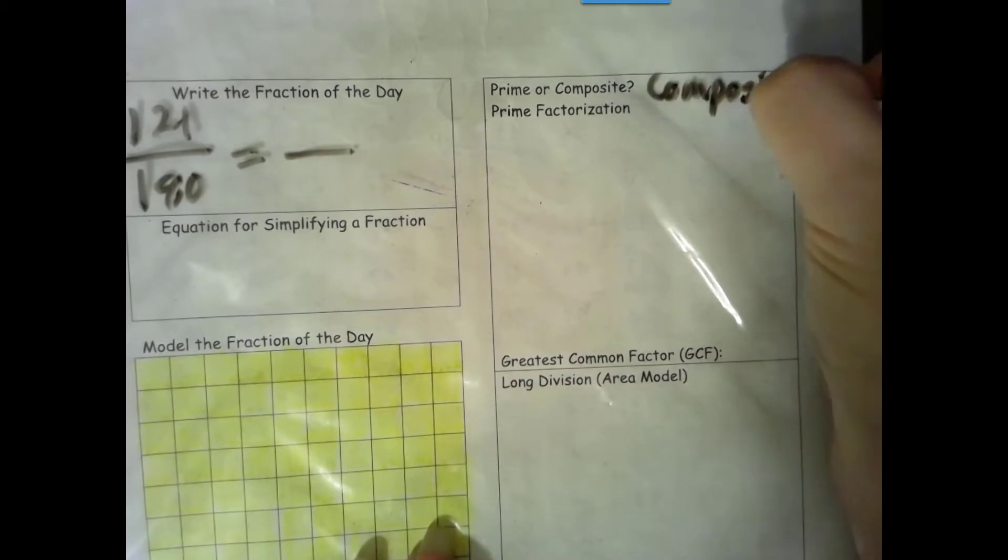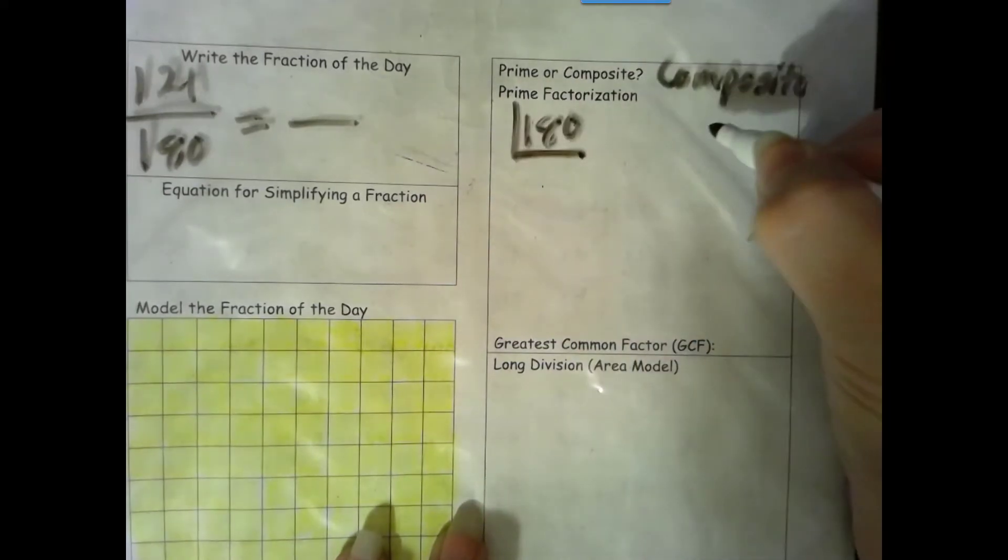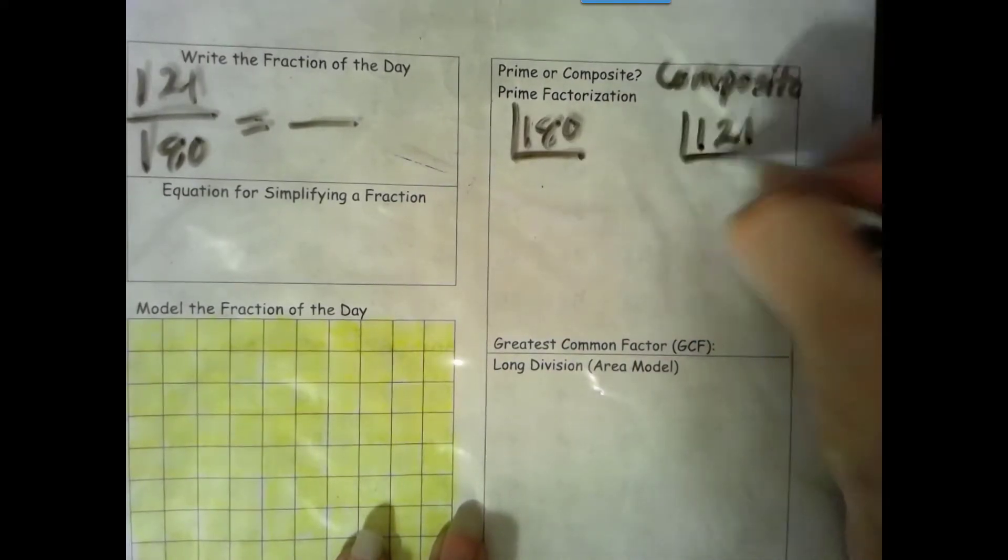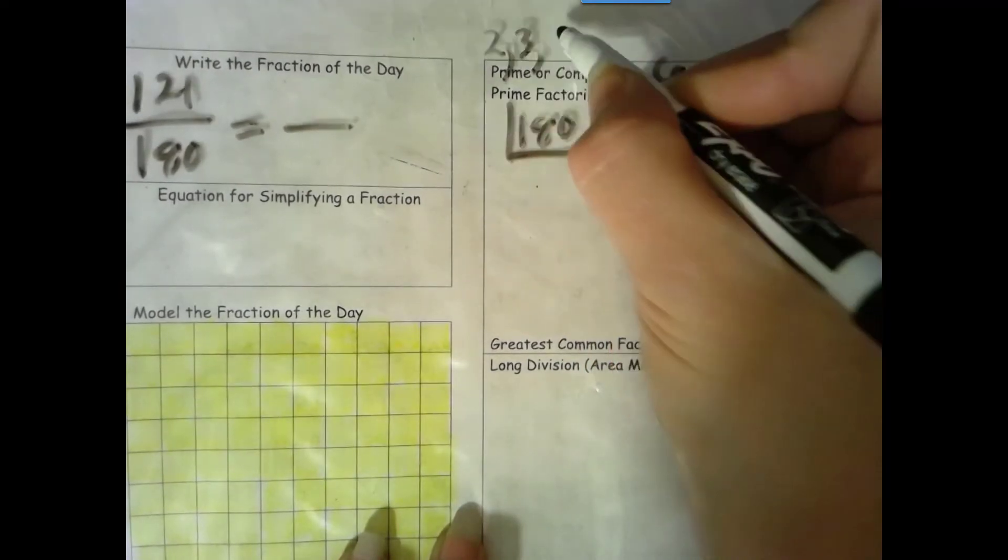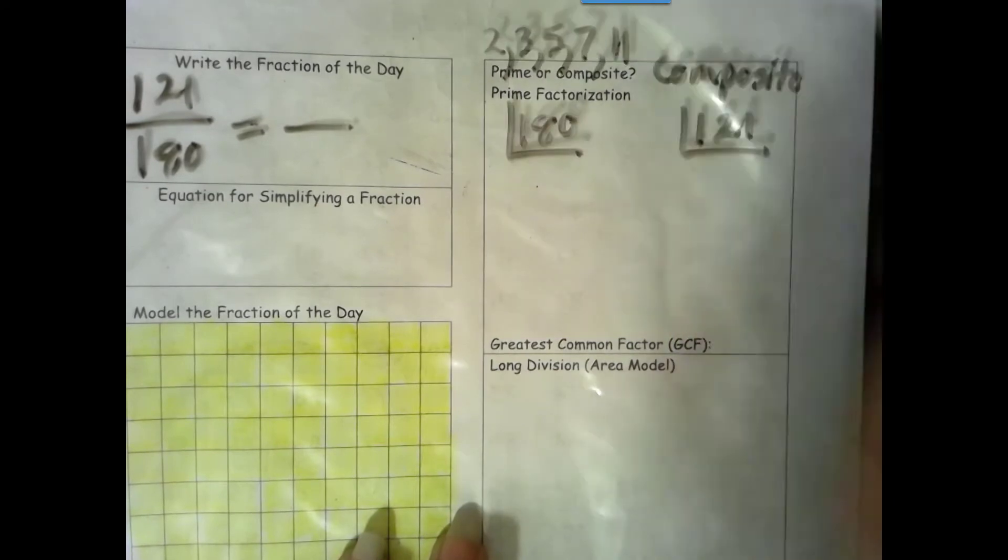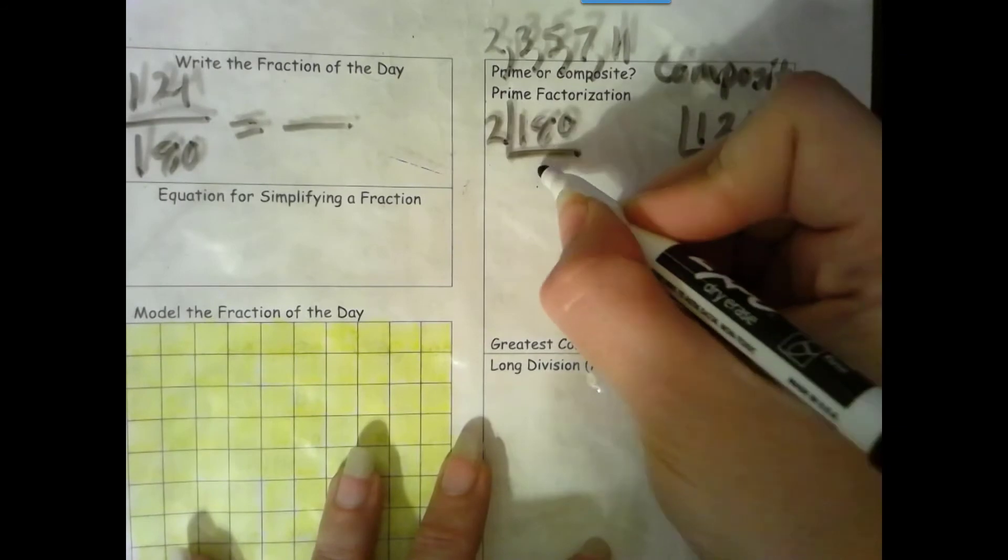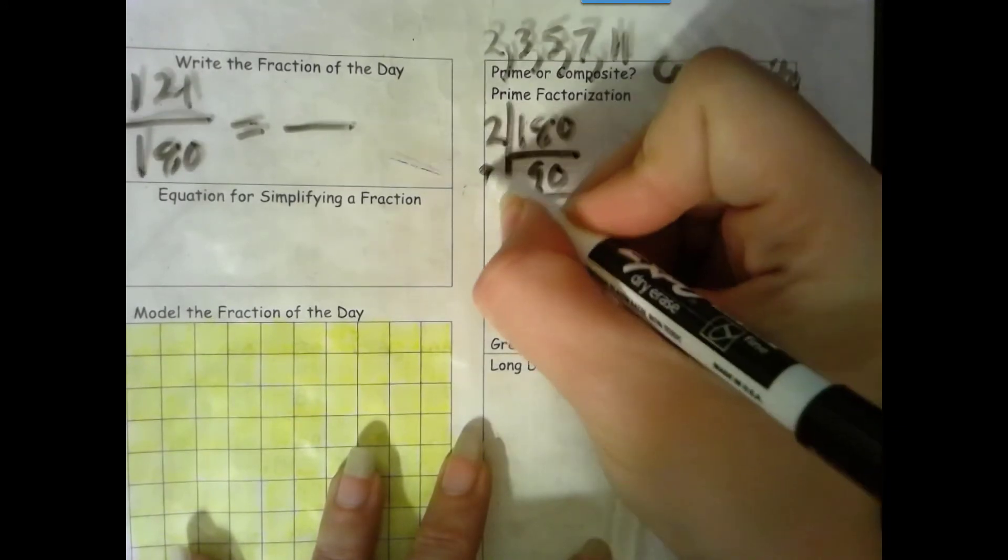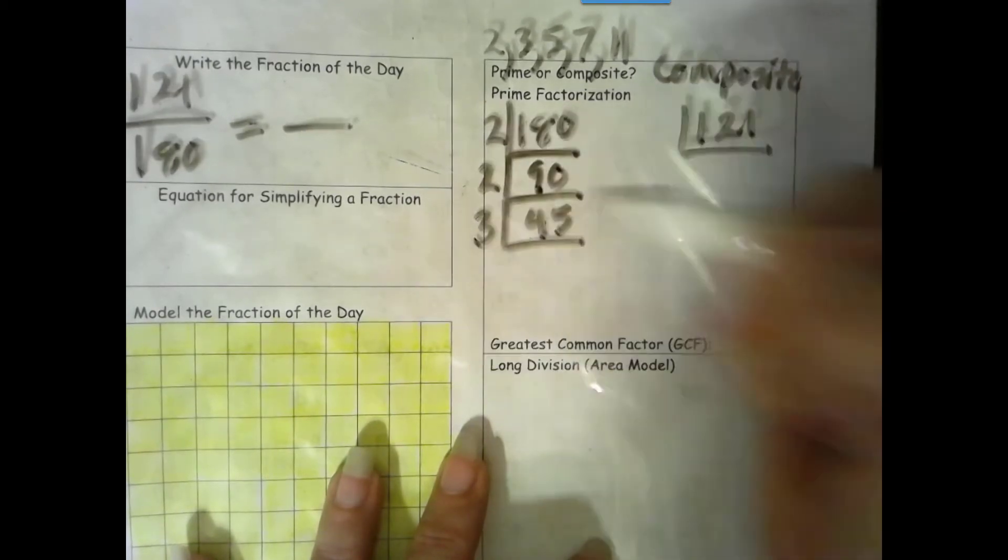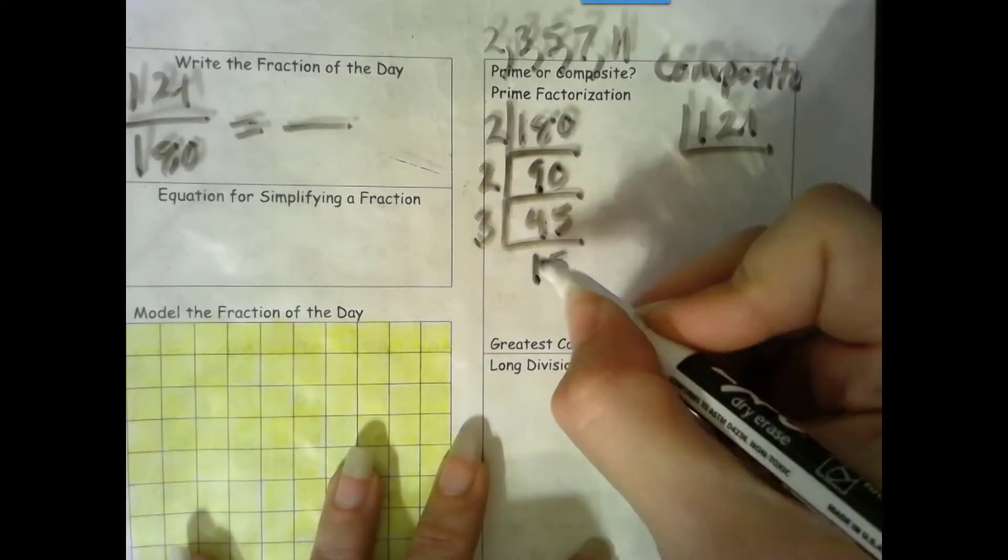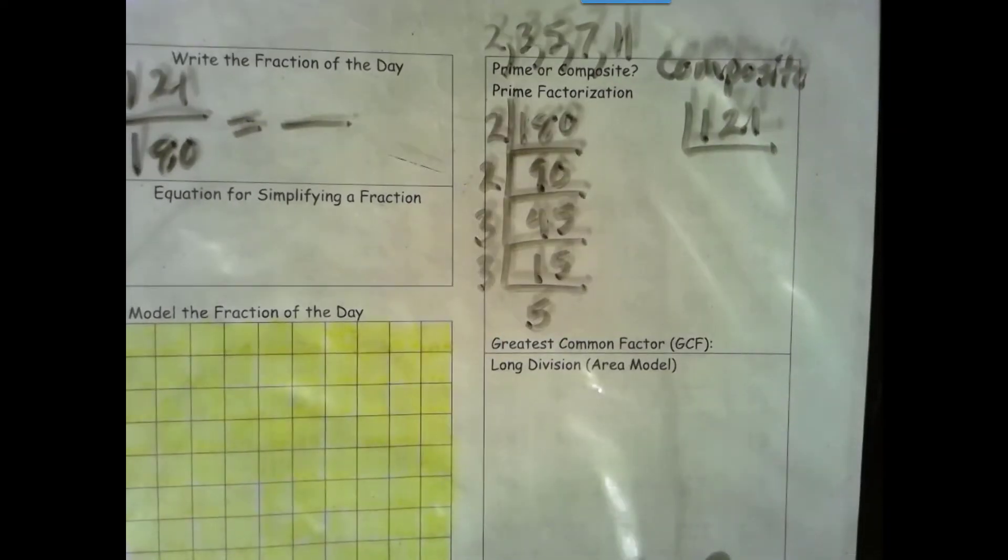That means we have to do our prime factorization for both our denominator and our numerator. We're going to use our first 5 primes to help us out: 2, 3, 5, 7, 11. Okay, 180, that's even. Half of that is 90. Half of that is 45. Divide by 3, I get 15. Divide by 3, I get 5.